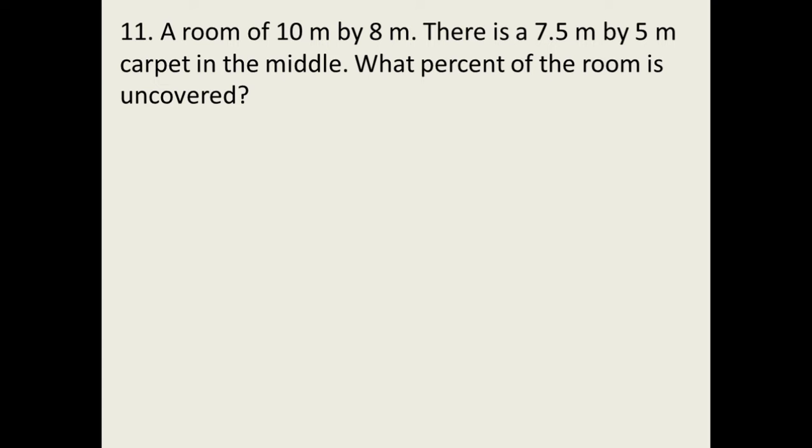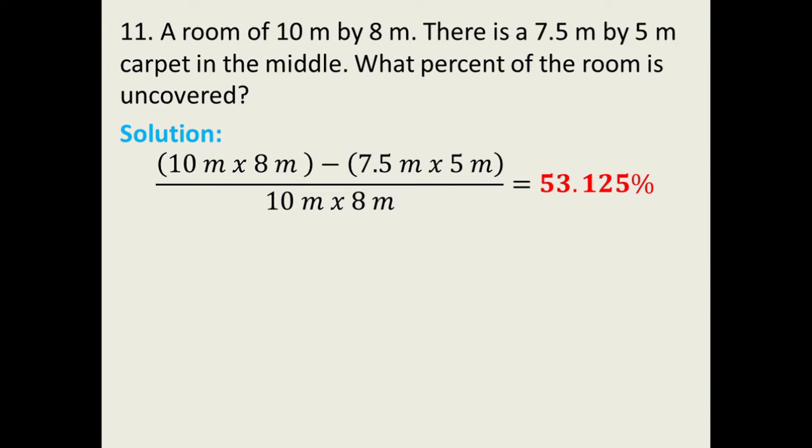To find the percent of the room which is uncovered, we need to get the difference of the area of the room minus the area of the carpet in the middle divided by the area of the room. There it is. You can use your calculator there and then you can come up to this answer.